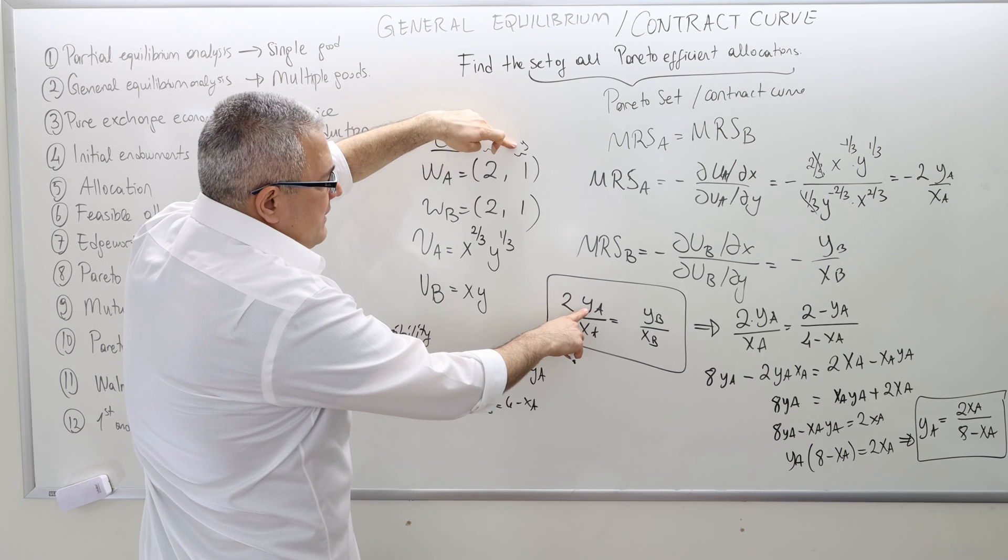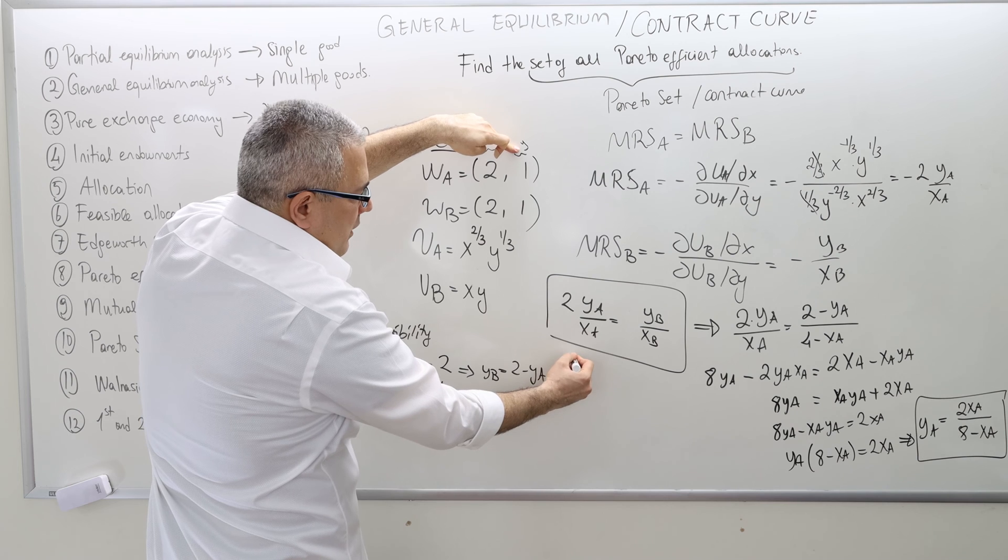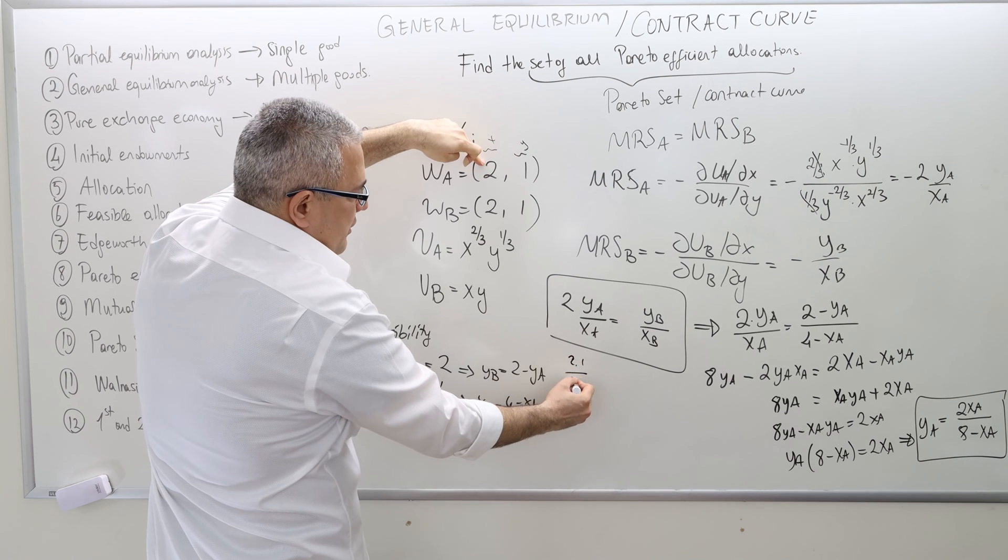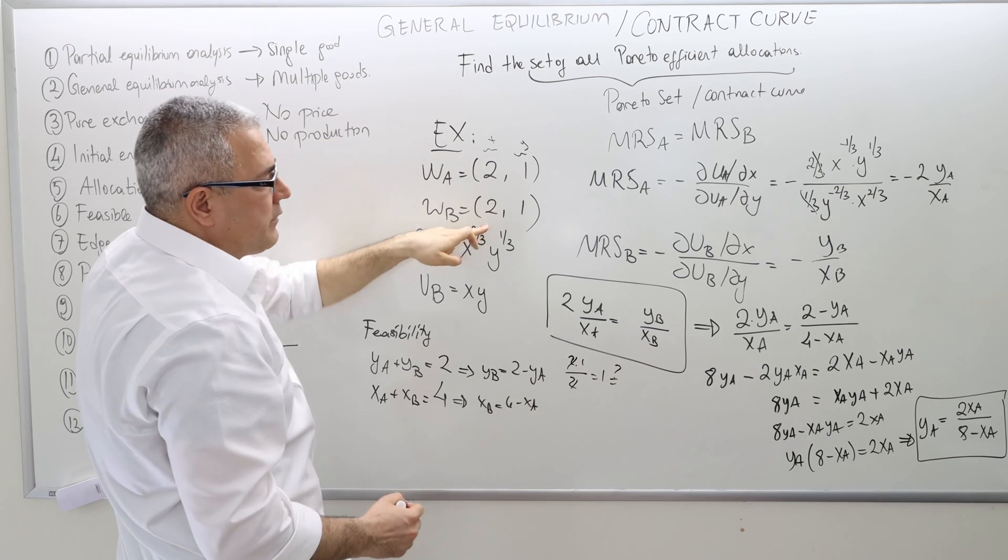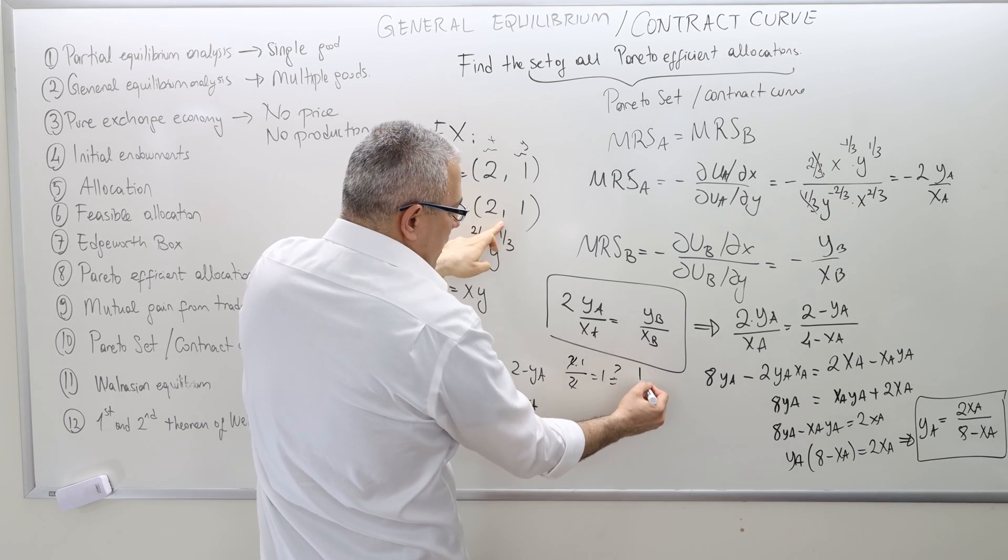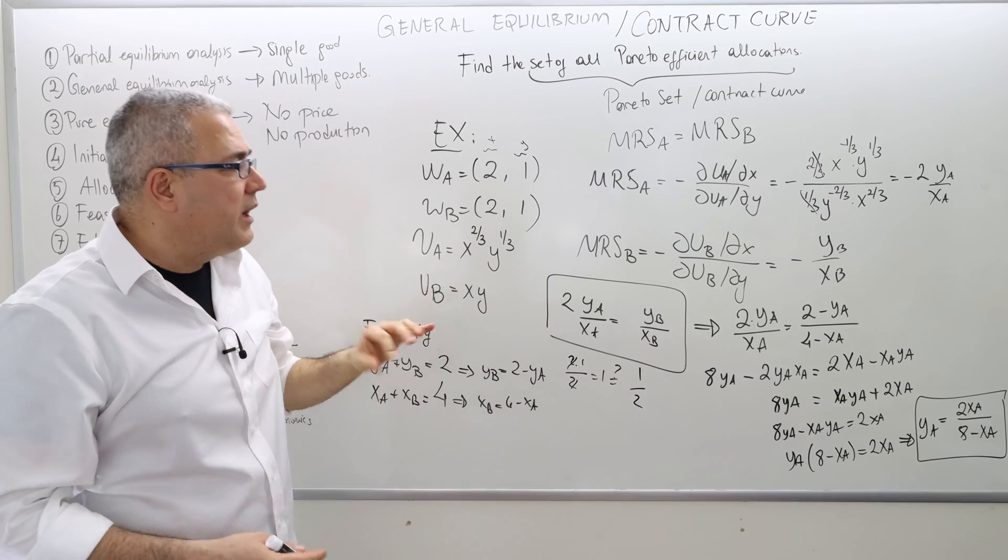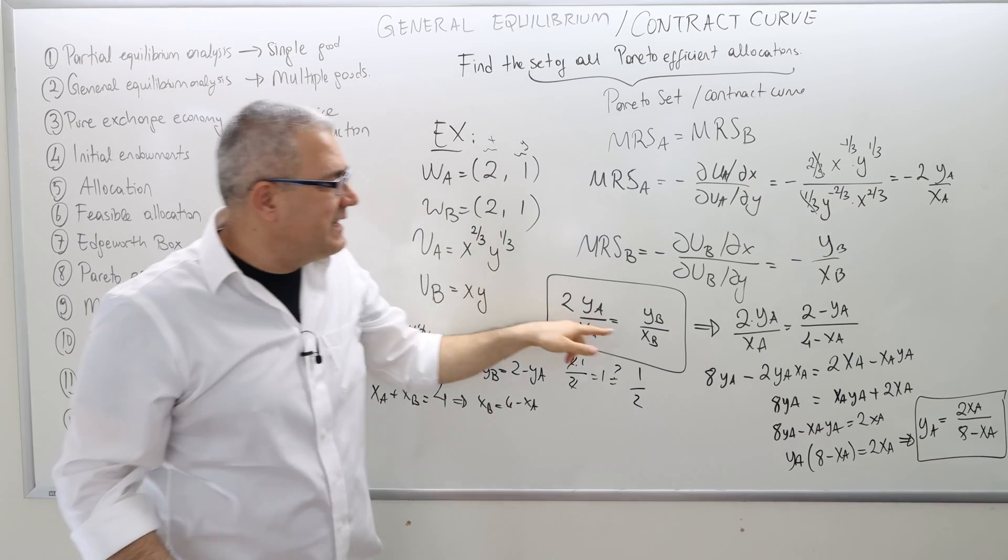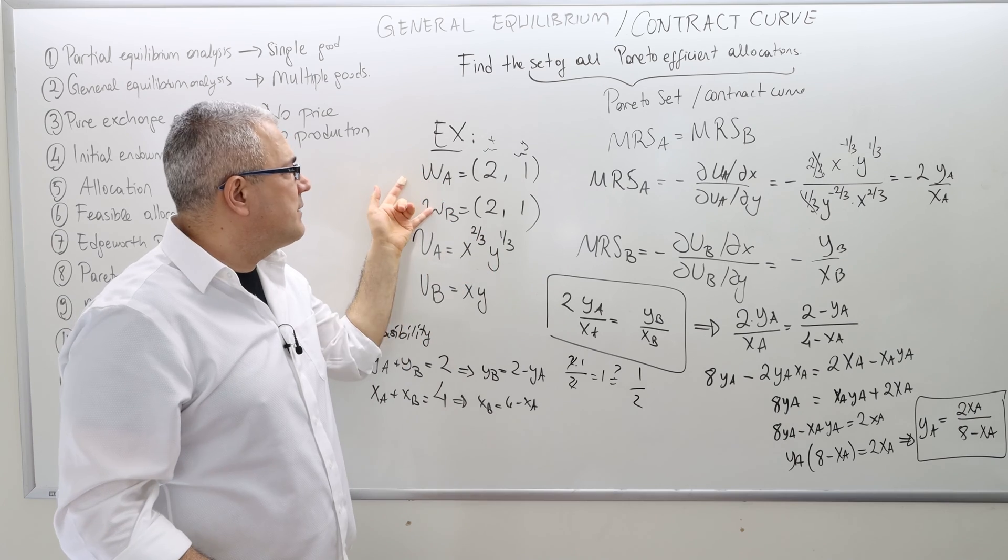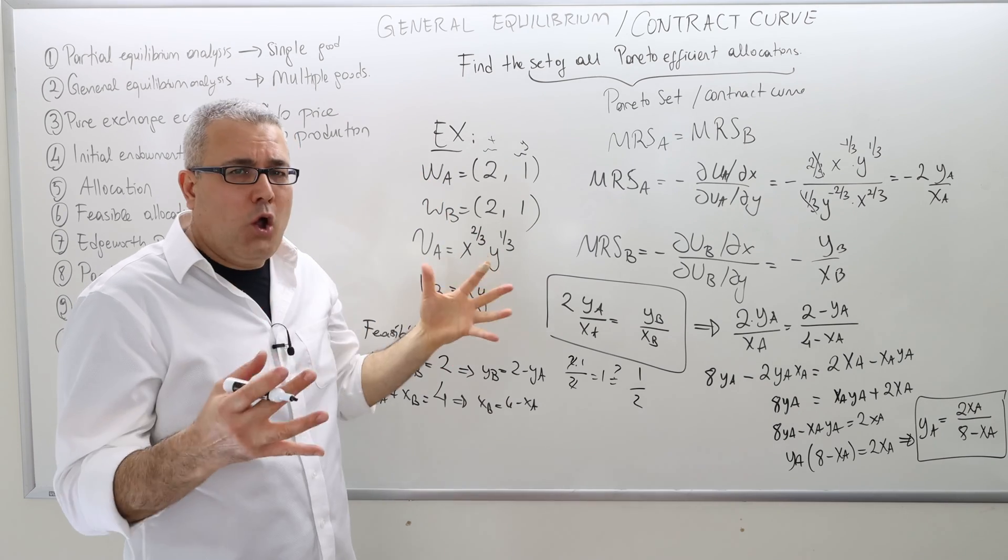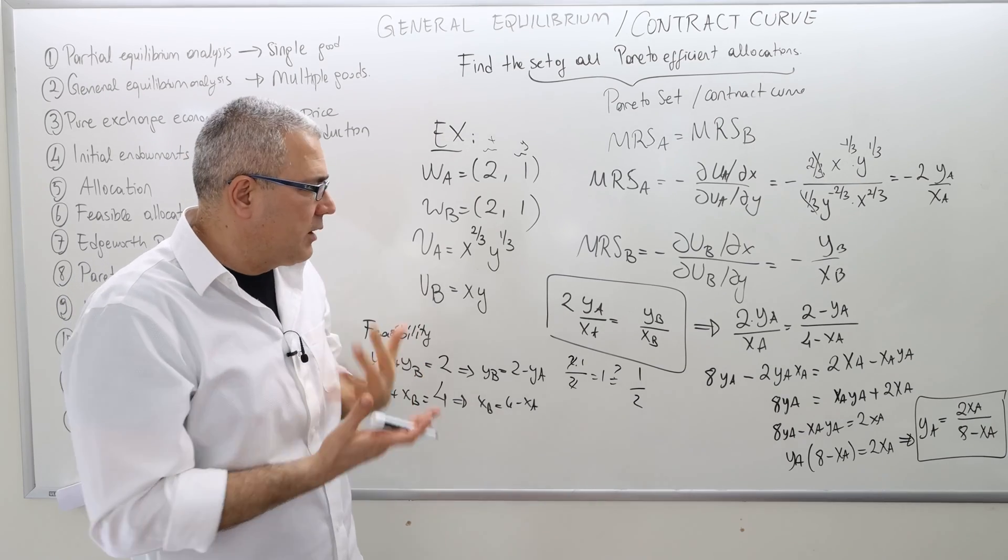For example, is the initial endowment Pareto-efficient in this problem? y_A is, this is agent A, this is y, so it's 1. So 2 times 1 divided by x_A, which is 2, so it's basically 1. Is this equal to y_B over x_B? y_B is 1, x_B is 2, 1/2. Is 1 equal to 1/2? No. Therefore, the initial endowment is not satisfying the contract curve, which means this point is not on the contract curve. Hence, it's not Pareto-efficient allocation.